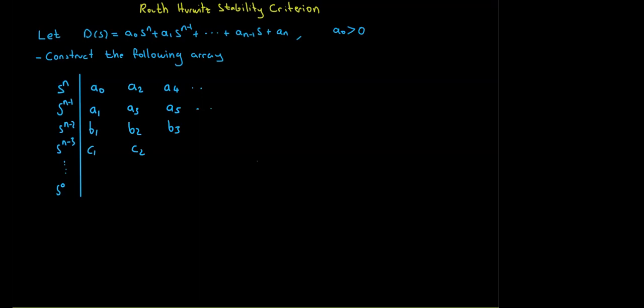The Routh method exploits the fact that all roots of a polynomial are on the open left half plane if certain algebraic combinations of the coefficients are satisfied. If those coefficients satisfy certain properties, you can show that all roots are on the open left half plane.